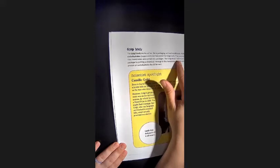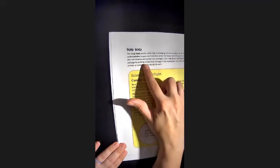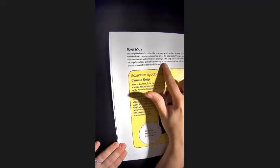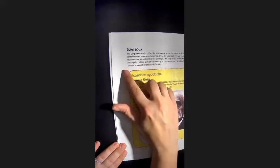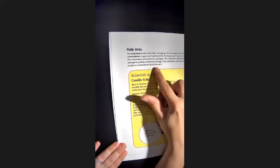The Golgi body addresses each package by putting a chemical message in the membrane that tells where the protein or carbohydrate should be sent.